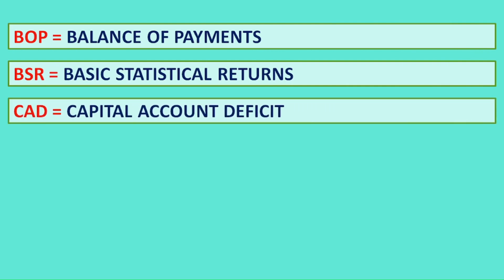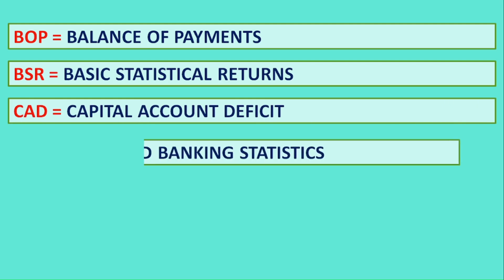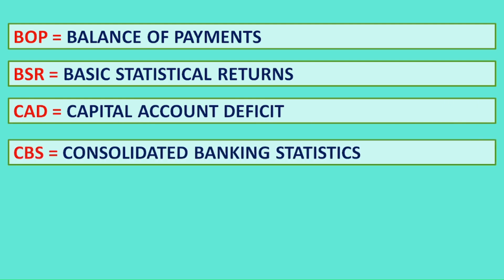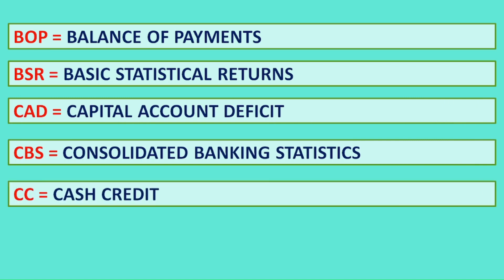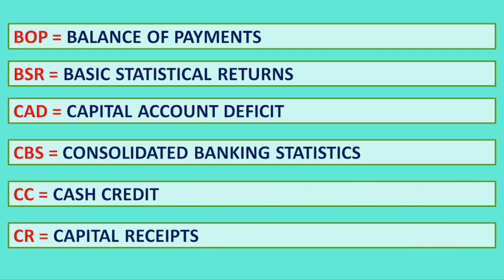CAD: Capital Account Deficit. CBS: Consolidated Banking Statistics. CC: Cash Credit. CR: Capital Receipts.